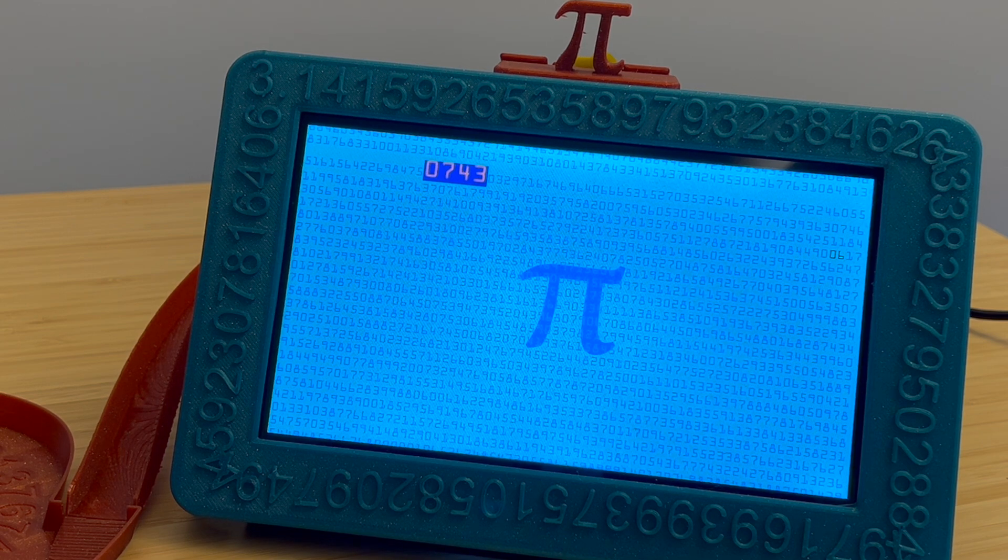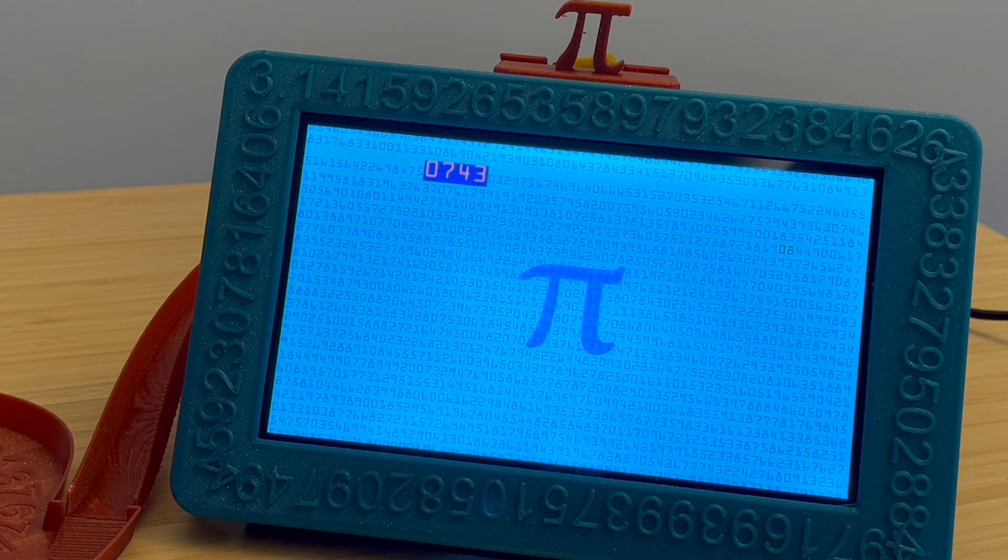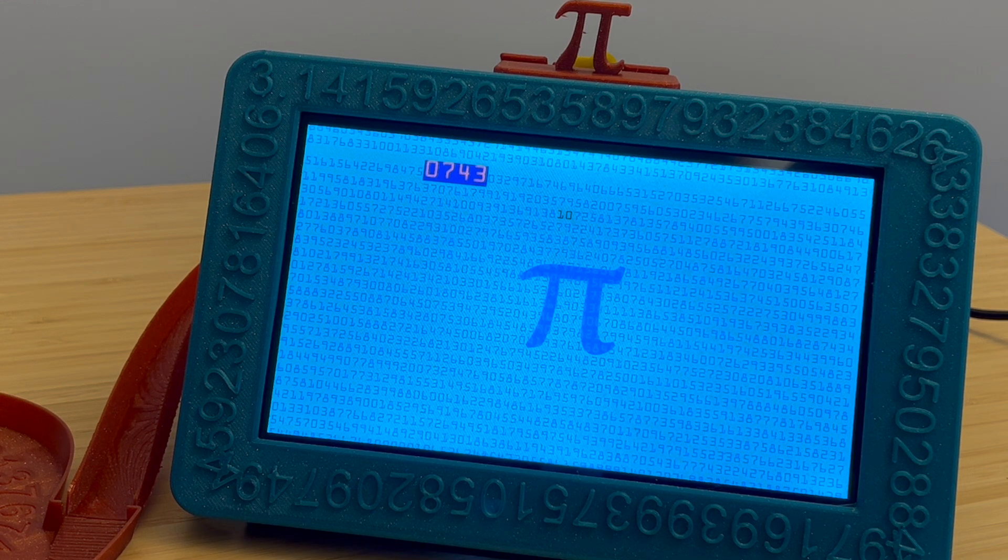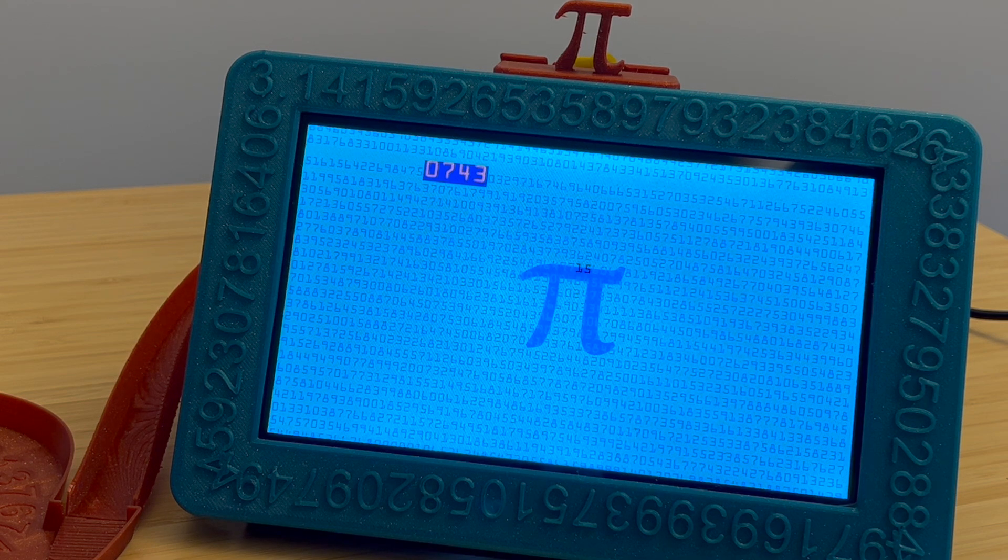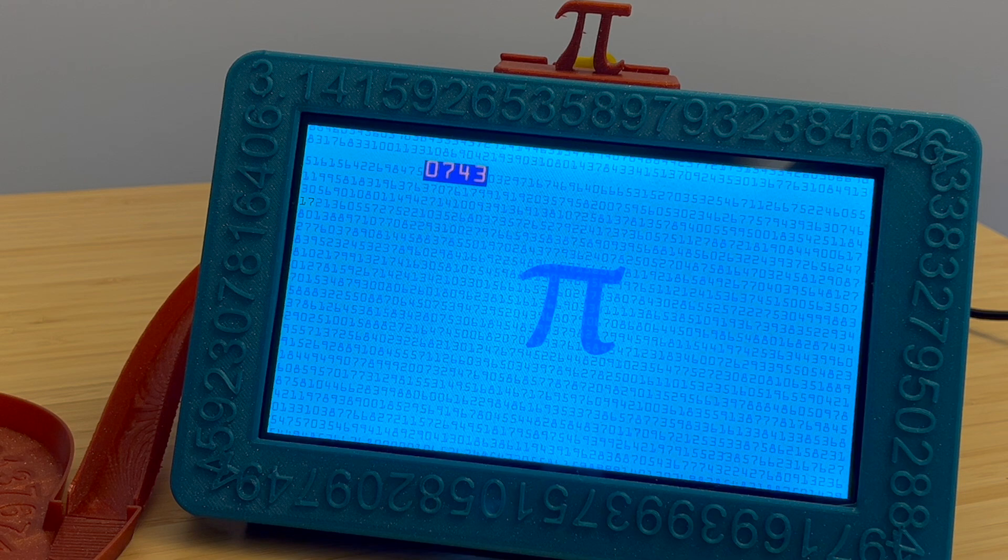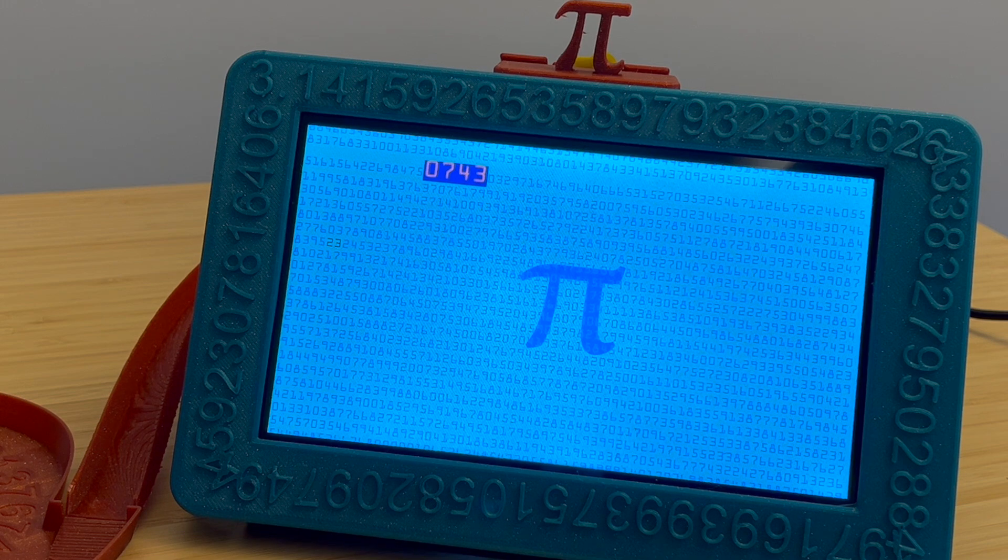If you configure your clock to show it in 24-hour time, it would show right now 1943, so you'd have to be up in the middle of the night to see Pi time.